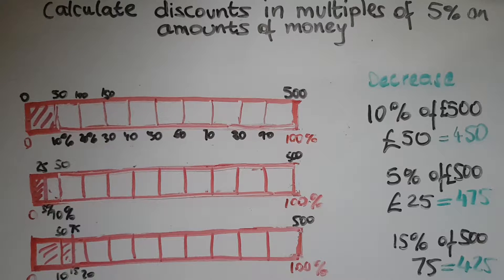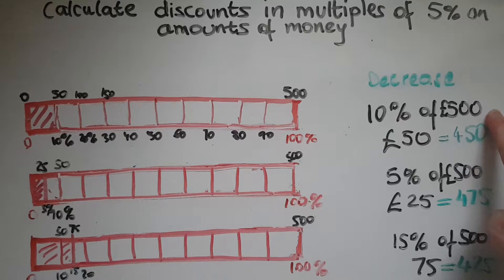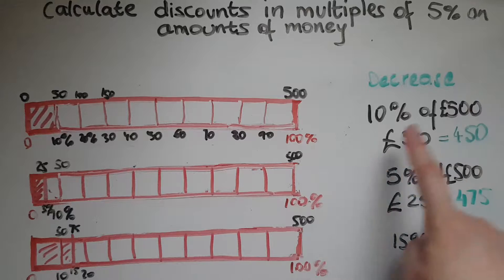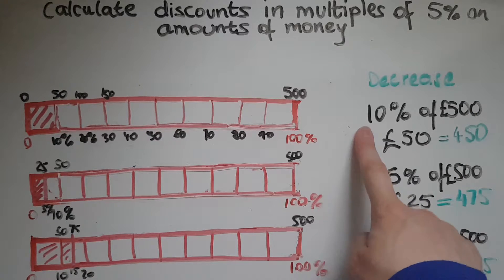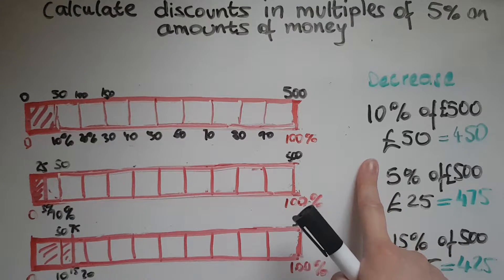What does discounts mean? The original amount is being reduced by a percentage, and we'll look at five percent. So if the original amount of a coat is 500 pounds and there is a discount of 10 percent, that means 10 percent is reduced from the original amount.